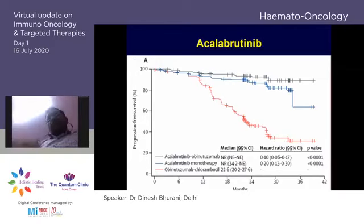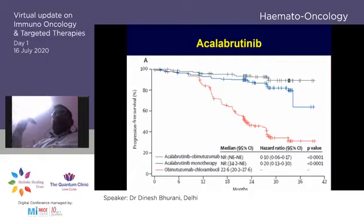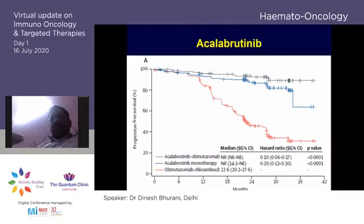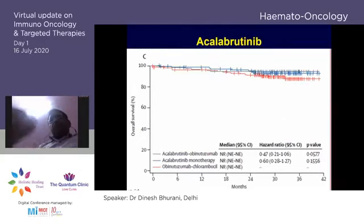Acalabrutinib is also now available. Data from ASH 2019 showed acalabrutinib alone or with obinutuzumab is better than obinutuzumab plus chlorambucil or chlorambucil alone. There is also an overall survival difference between these arms.